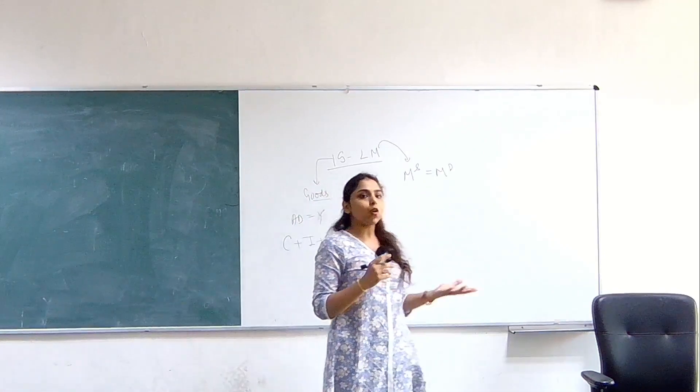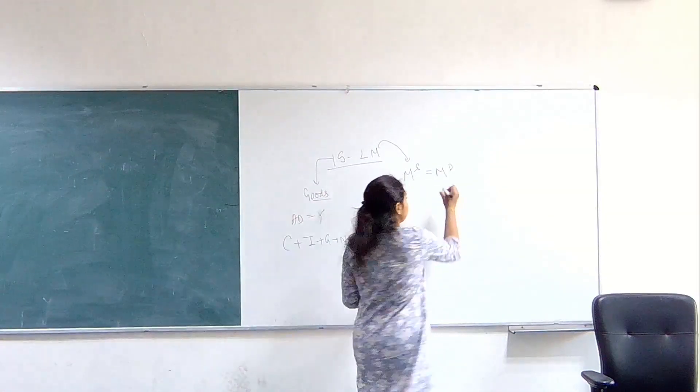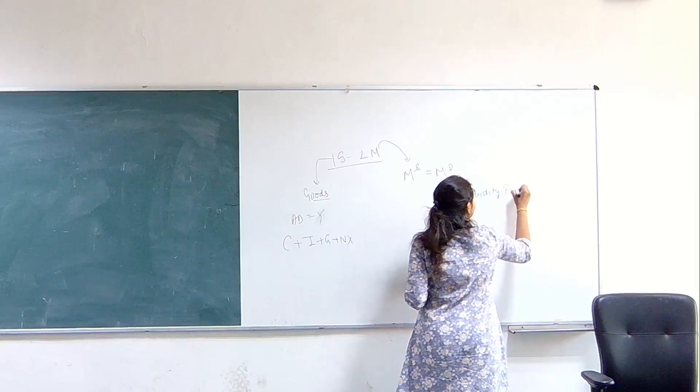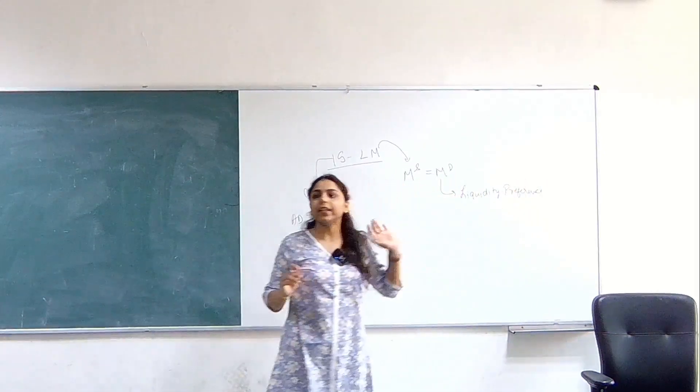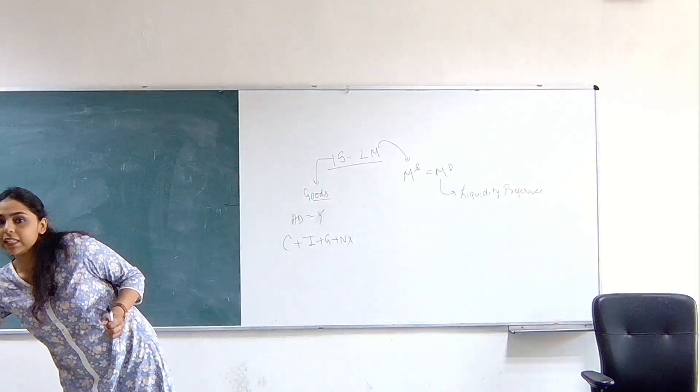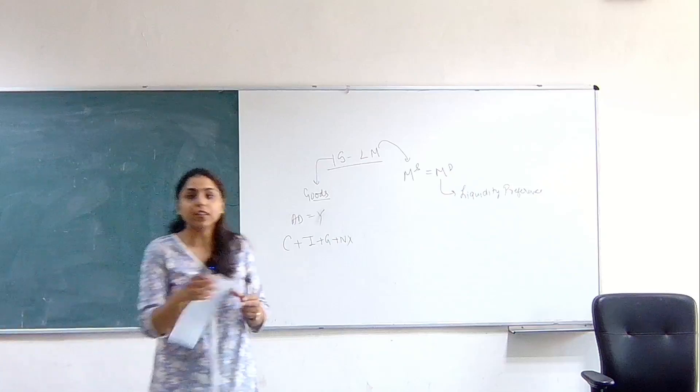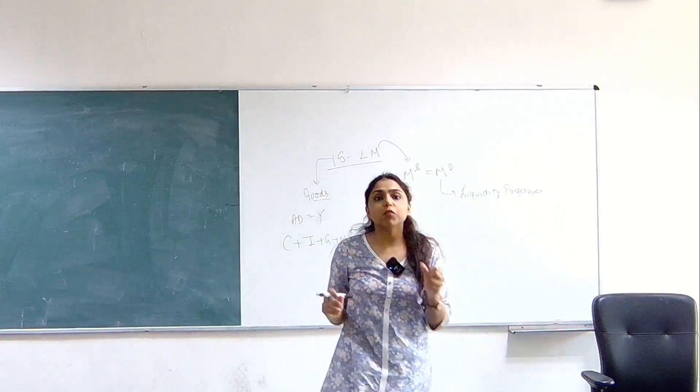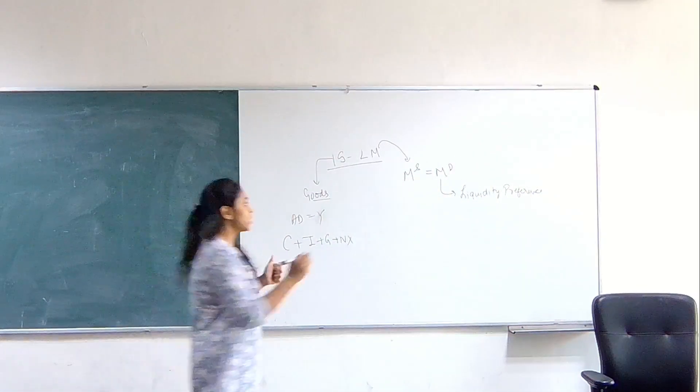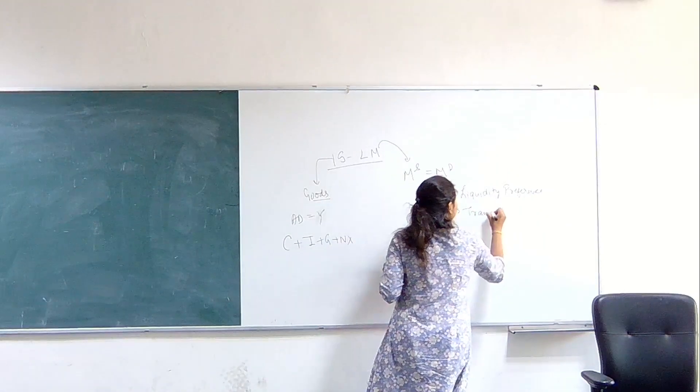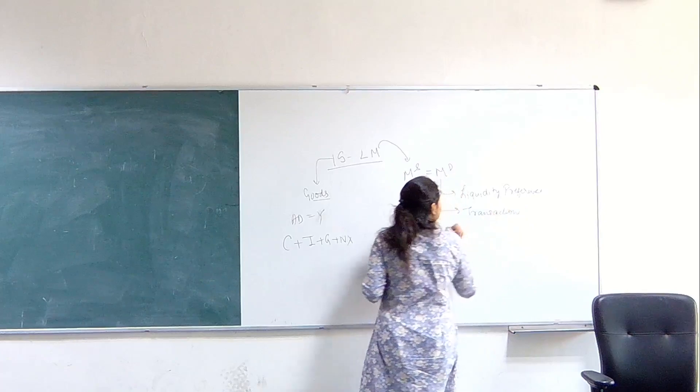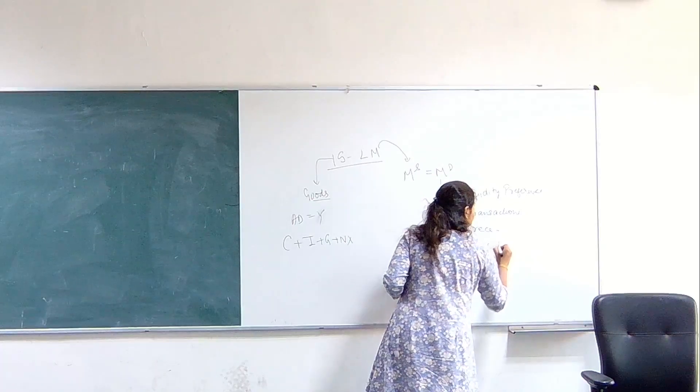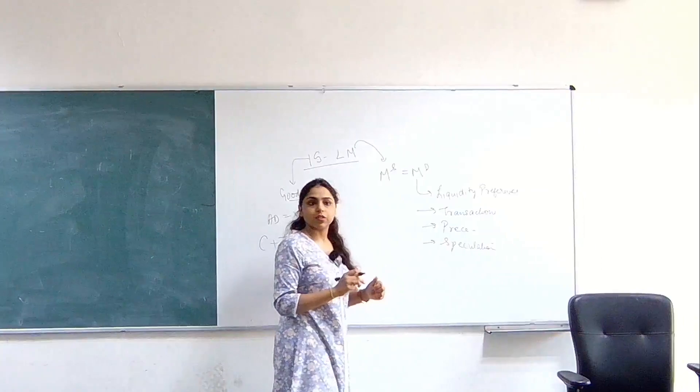Money demand we call liquidity preference. So this is our liquidity preference - how much money I wish to hold given the interest rate and the income that I have. Money is demanded for several reasons. It is used for transactions, for any precautionary measure, or for speculation.